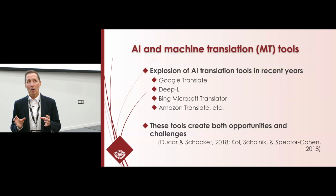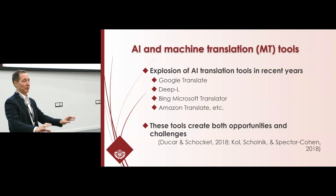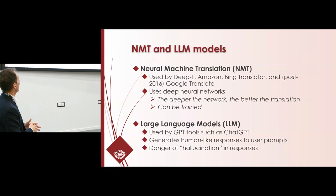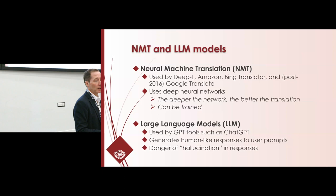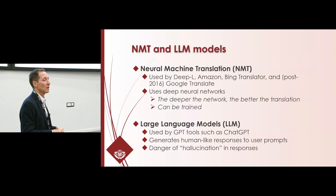The problem is that often we tend to set our eyes on either the opportunities or the challenges, when we need to be looking at both of them at the same time. NMT — Neural Machine Translation — is what is used by DeepL, Amazon, and Bing Translator, and post-2016, Google Translate. They used a different model beforehand. Using deep neural networks means that the deeper the network, you get better translation. They can be trained, but it's a different type of training process which happens with the large language models.